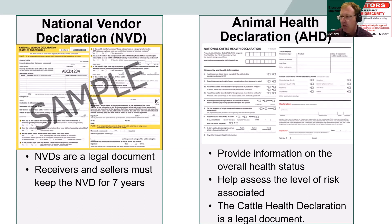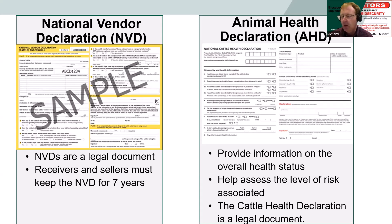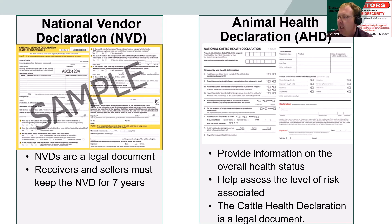Once they're signed, NVDs become a legal document, so you've got to make sure they can be stored securely and they're able to be checked if requested. The next step is animal health declarations. Whenever I considered buying anything I would request an animal health declaration — if somebody refused to give me one, I would not buy the stock. It provides a level of assurance that what they're signing and declaring is as true as they know it, and once signed it becomes a legal document that needs to be kept for a similar length of time as NVDs.